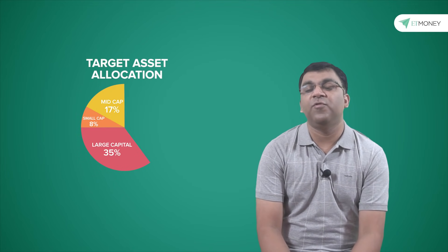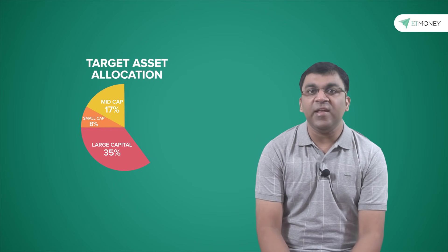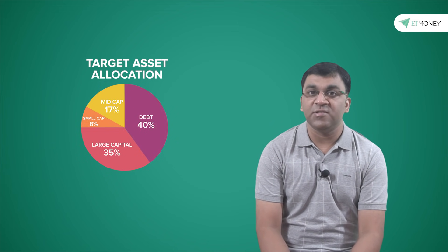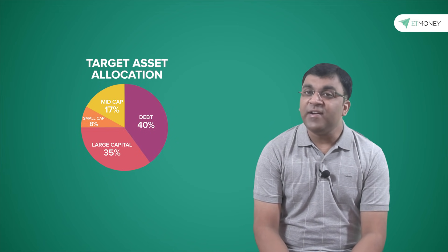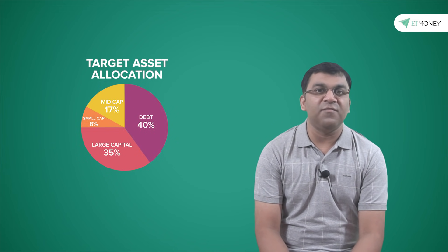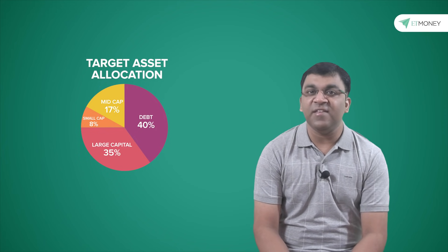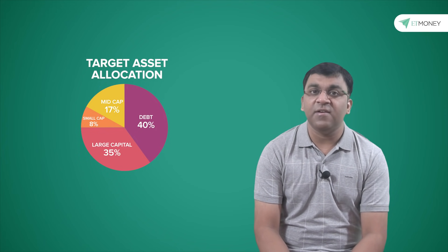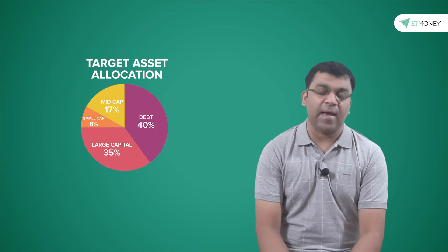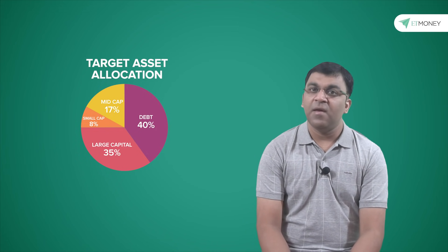The asset mix most commonly used by investors all around the world is the 60-40, that is, 60% of the portfolio is in equity while 40% is in bonds. And over time, I too have a lot of comfort with the 60-40 mix with equities split further into large, mid and small cap funds.